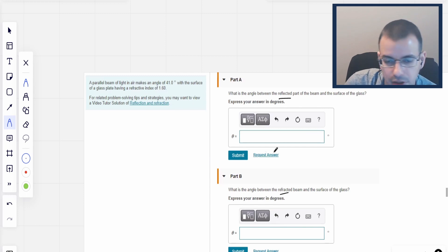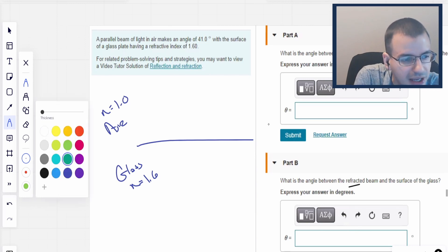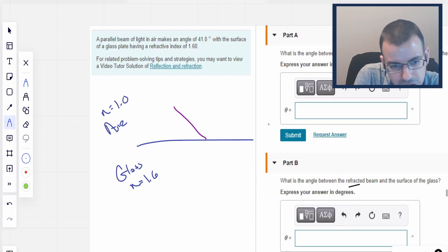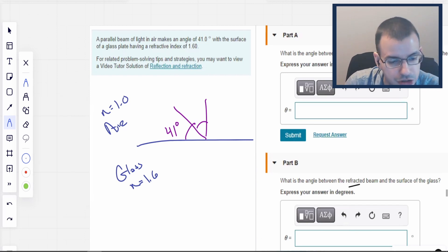So I'm going to start by drawing a picture because I start pretty much every physics problem. We have glass with index of refraction 1.6. We're going to have air up here. Index of refraction of air is assumed to be the same as vacuum, it's about one. And we have light and it's going to come in like this.